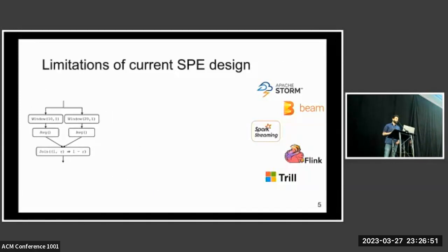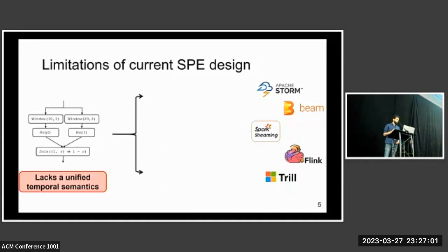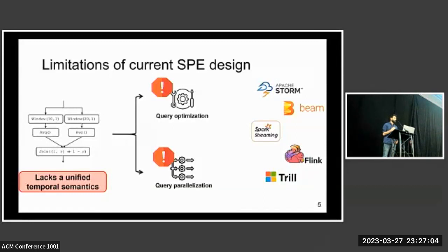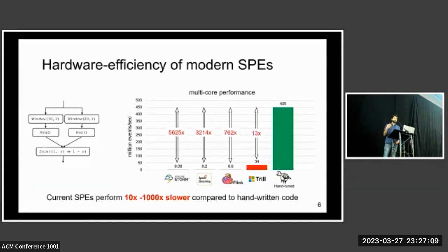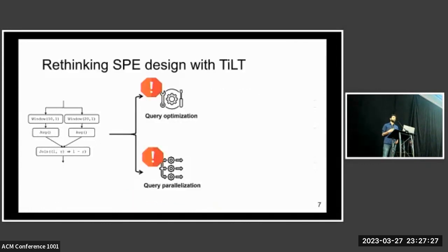Even though this is a common design pattern followed in SPEs, we observe that the query representation model followed in modern stream processing engines lacks unified temporal semantics. As a result, these systems can only support a limited set of query optimization and parallelization strategies. Due to these limitations, stream query processing in modern SPEs is highly hardware inefficient, and often performs one to three orders of magnitude slower compared to corresponding hand-tuned implementations. Addressing these limitations and bridging the performance gap requires fundamentally rethinking how stream processing engines are designed and built.